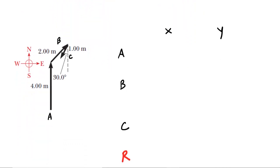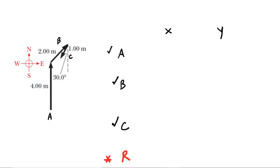We have our three vectors, which we've called A, B, and C, and then our job is to find the resultant. We're going to break vectors A, B, and C into their X and Y components. Starting with vector A, we can see that it is pointing straight upward along the Y-axis, which indicates that its X component is zero meters. The Y component is positive four meters because that vector is pointing straight upward.